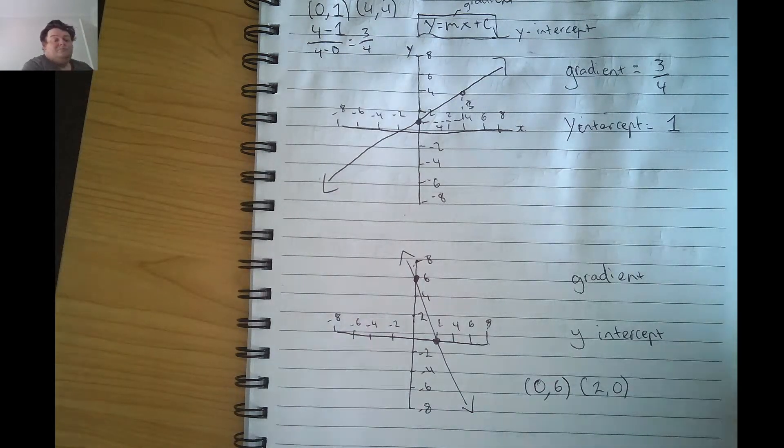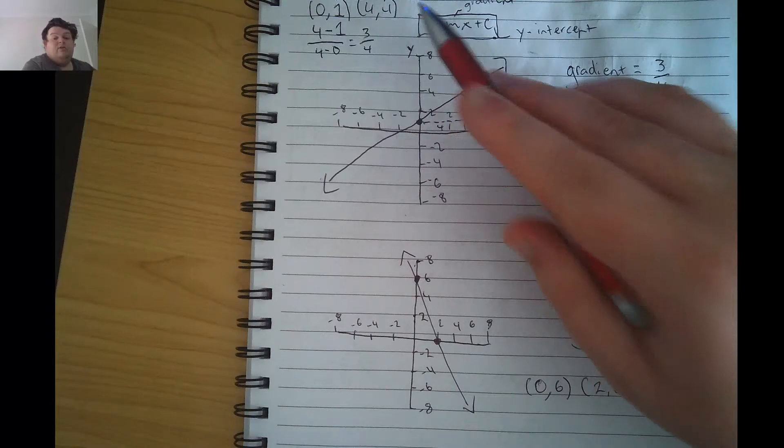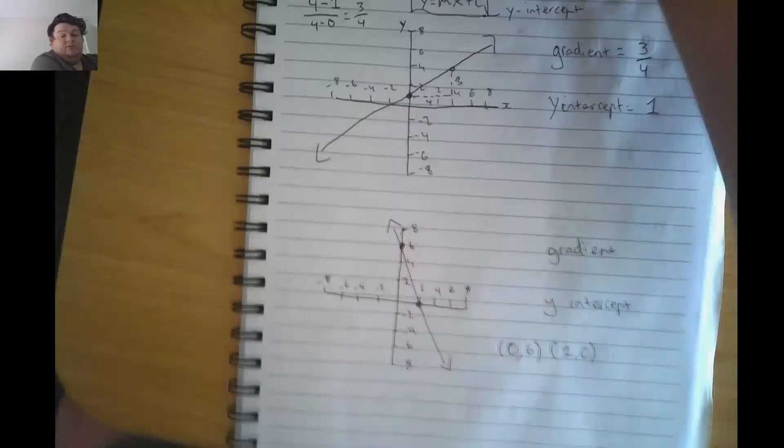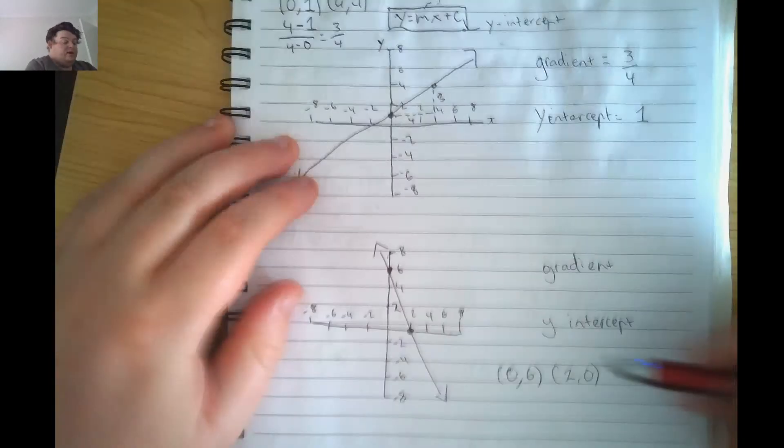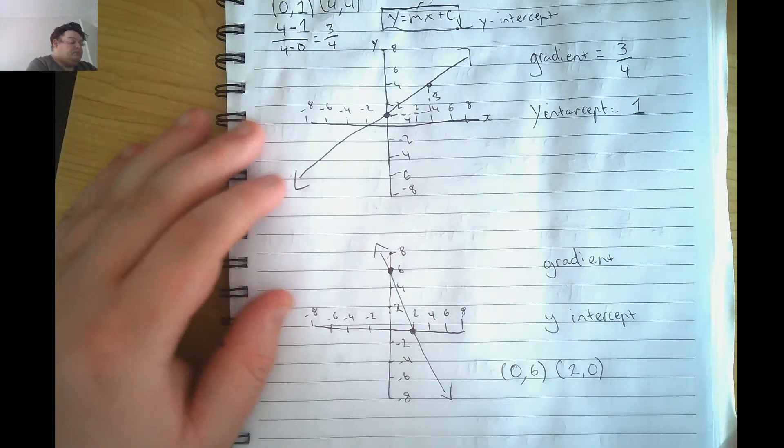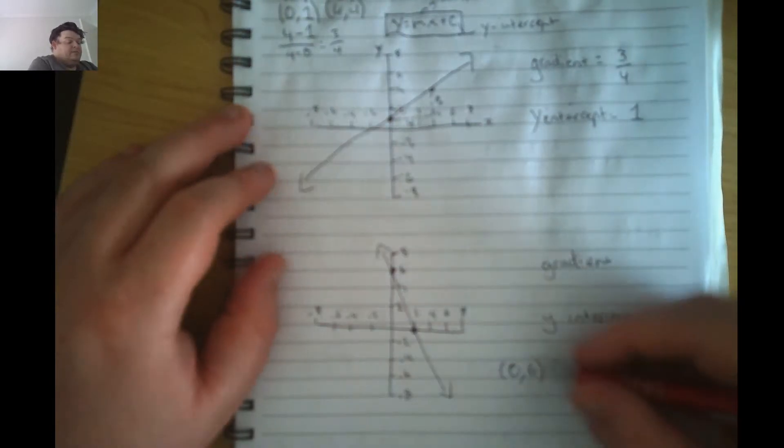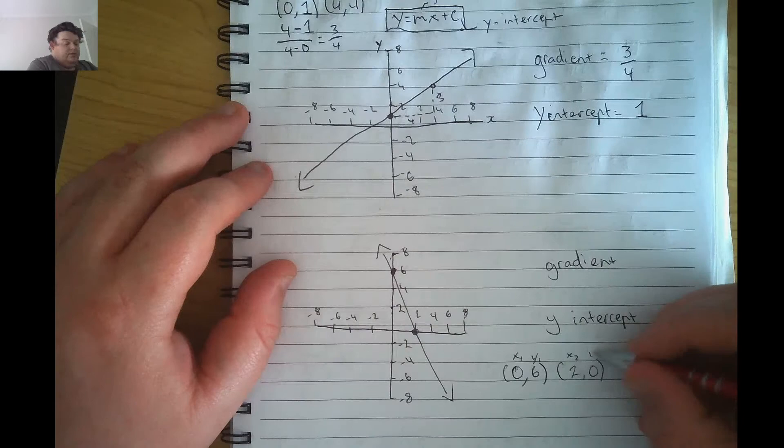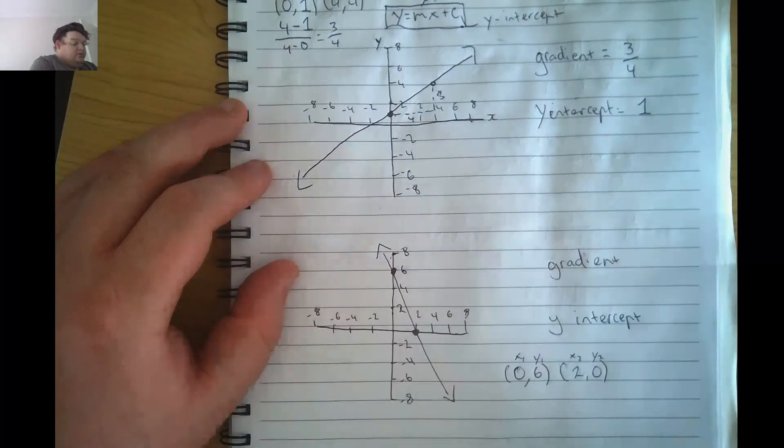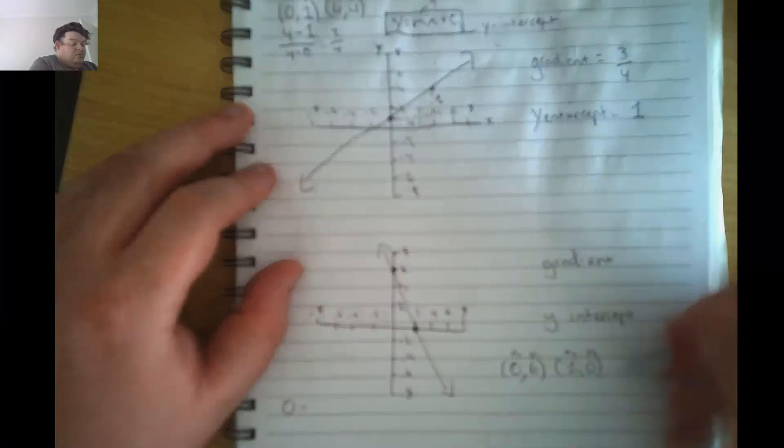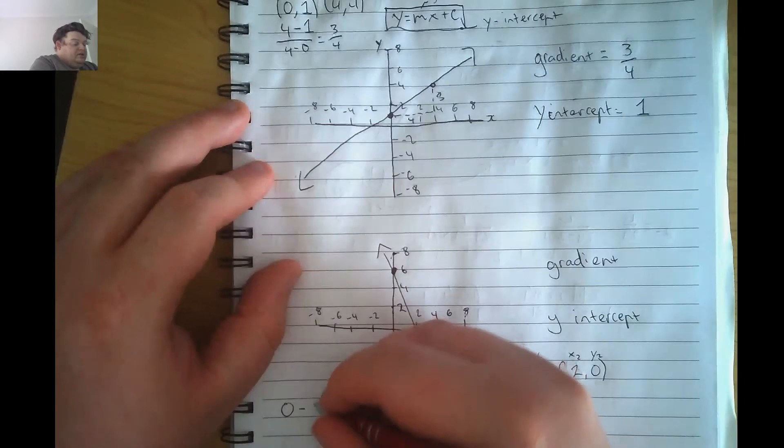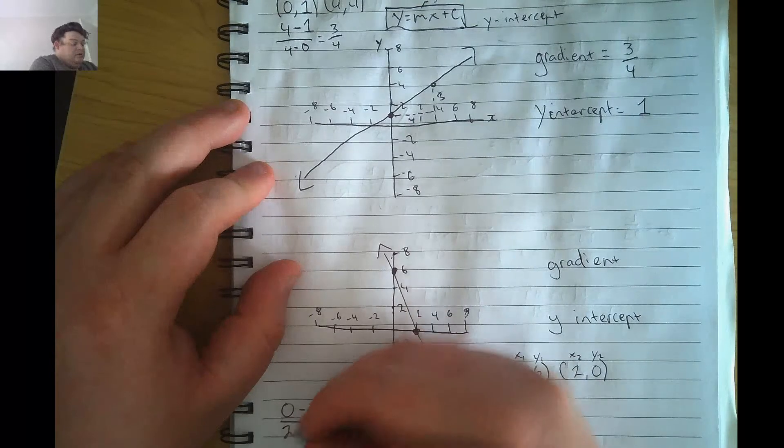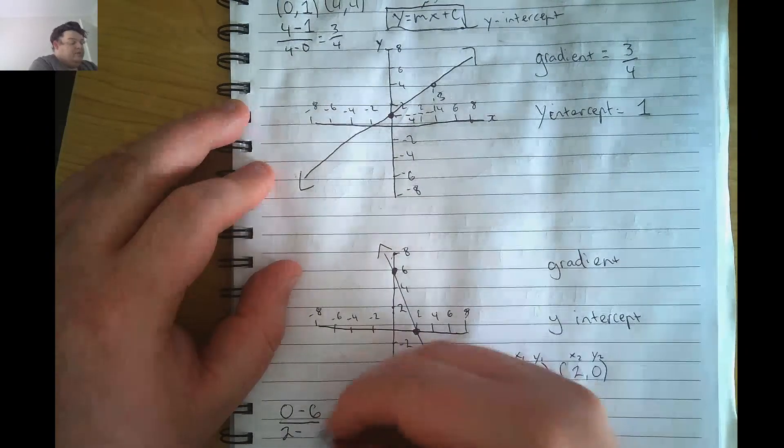If we do our first gradient solving method, let's make sure that you can see what I'm doing here. We do x1, y1, x2, y2. y2 which is 0 minus y1 which is 6, divided by x2 which is 2 minus x1 which is 0.